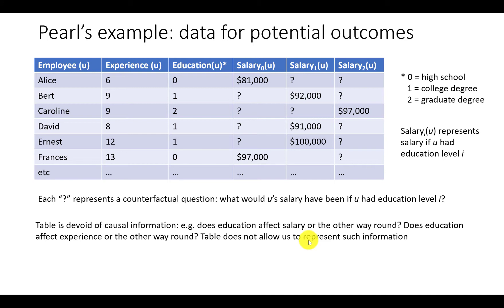For example, does education affect salary or the other way around? Does education affect experience or the other way around? The table doesn't allow us to represent such information.